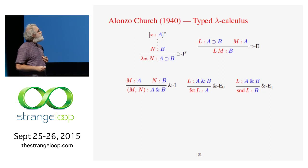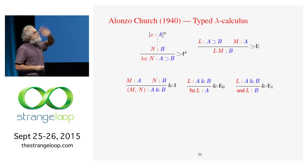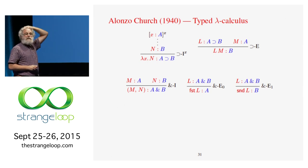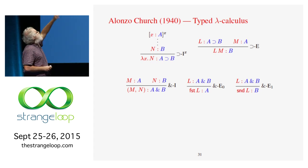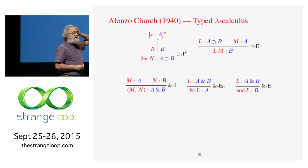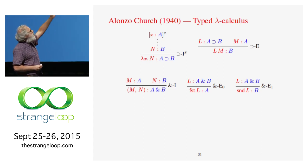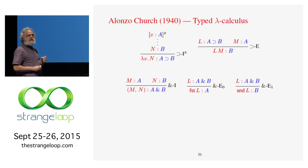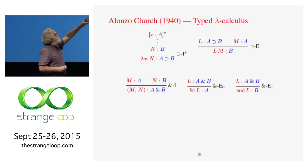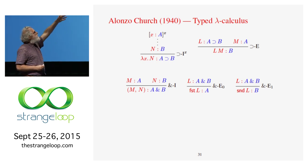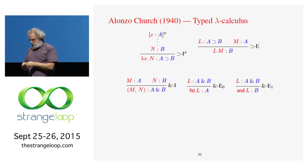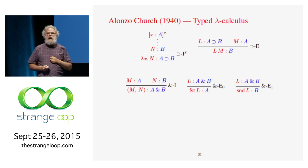In the simply typed lambda calculus, terms are in red and types are in blue. Lambda x.N, where x is a variable of type A and N has type B, is a function from A to B. If L is a function from A to B and M is an argument of type A, then applying L to M gives a result of type B. A pair is built from two terms of types A and B, giving an A-B pair. First and second extract from the pair: first gives A, second gives B.